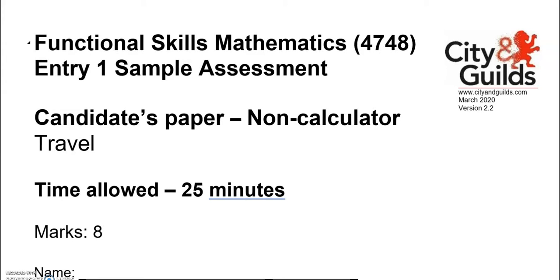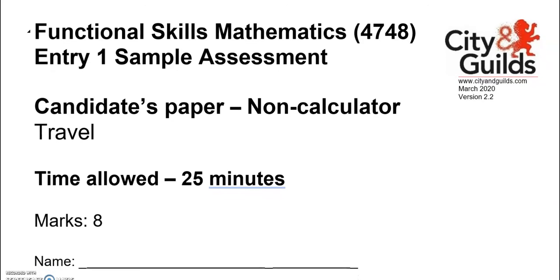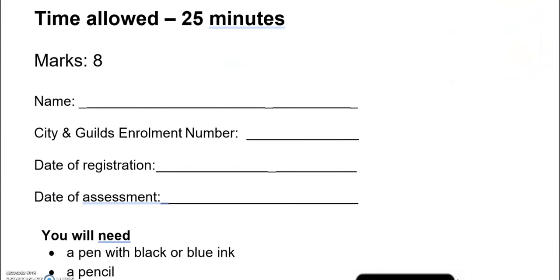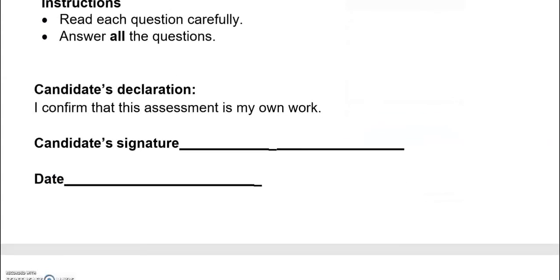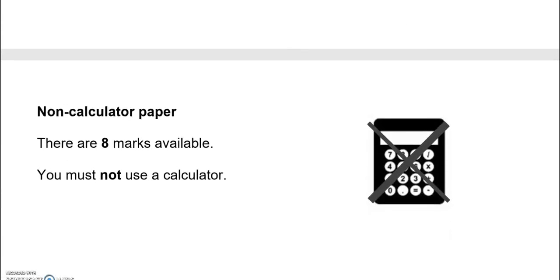This is an entry 1 functional skills practice paper from City and Guilds. It's split into two parts. In part 1 you can't use a calculator. Part 1 is worth 8 marks. We'll have a look at each question in turn.